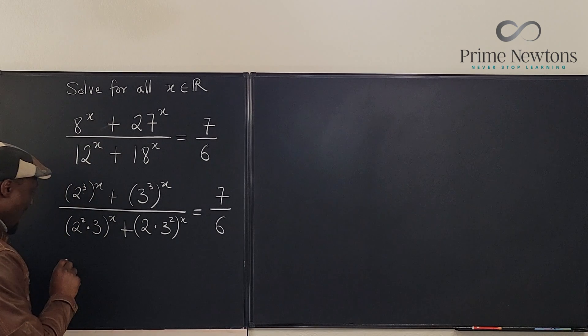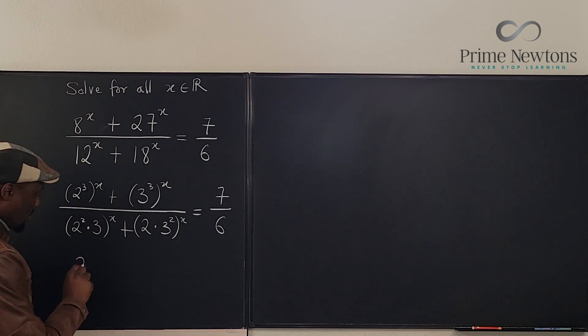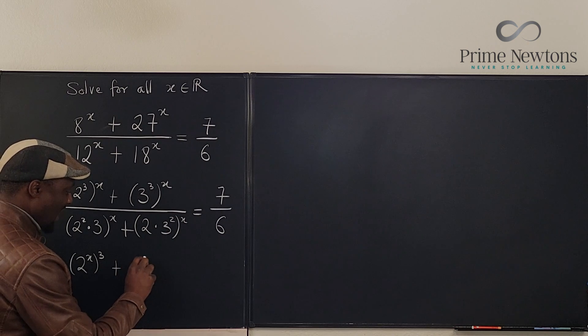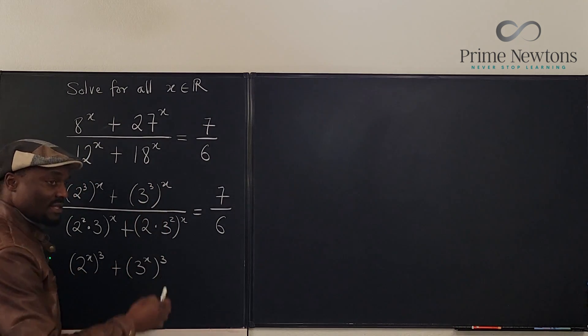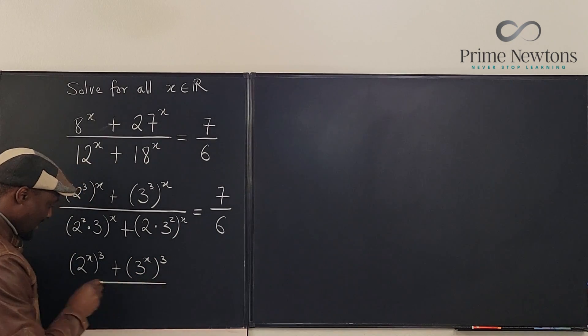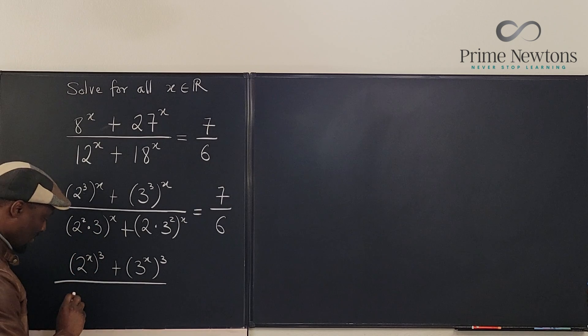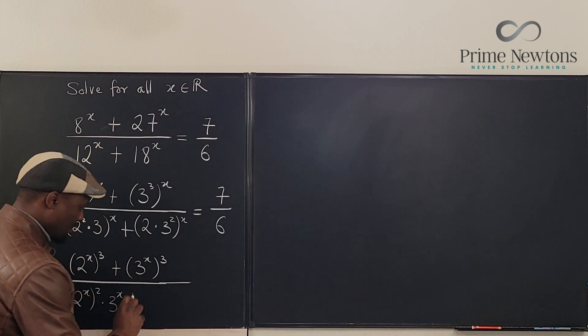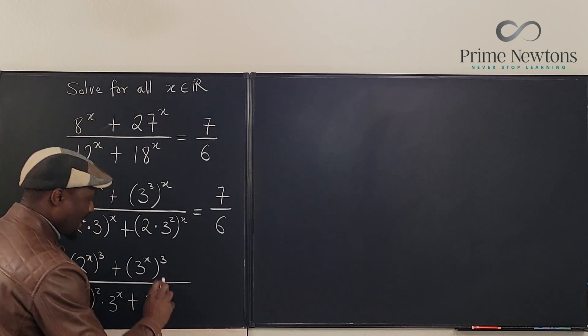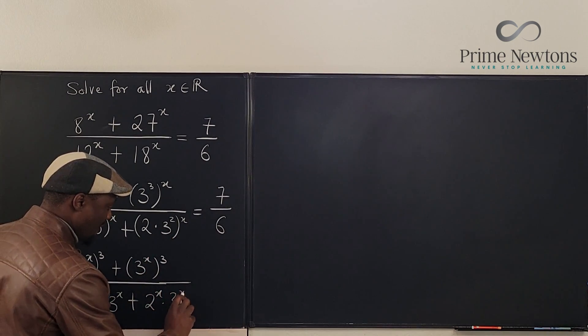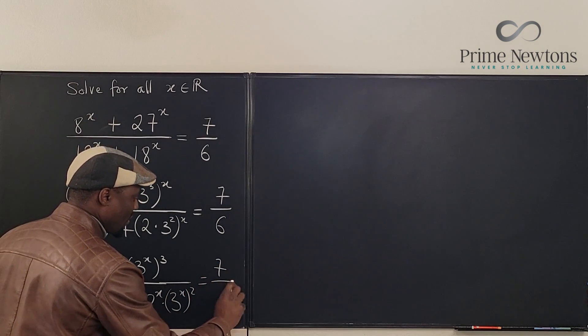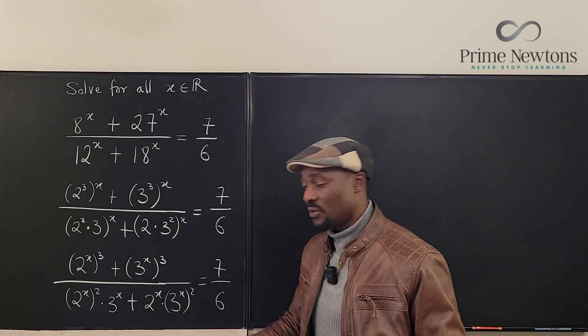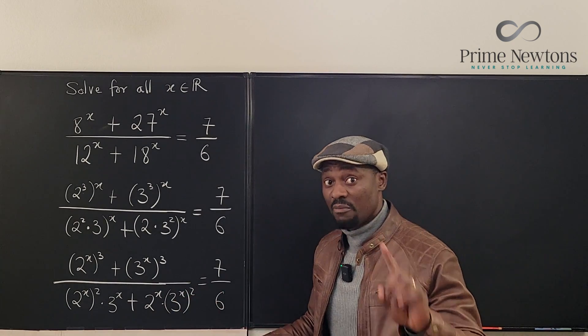You can decide to write this as 2 to the x cubed. Now we have it plus this is going to be 3 to the x cubed, and under we have 2 to the x squared times 3 to the x plus 2 to the x and 3 to the x squared, and I still have 7 over 6. What I'm going to do is make my life easy. I'm going to replace 2 to the x with another variable, 3 to the x with another variable. So I'm just going to have two variables here instead of one, but it will make things a lot easier.